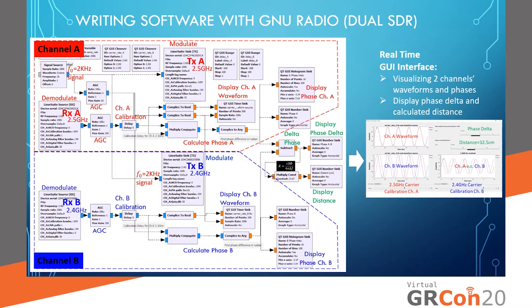Here is the GNU Radio code for my dual SDR design. It includes channel A and channel B, which are essentially slightly edited versions of the previous single SDR code, duplicated. There is also a portion which combines the two channels and calculates the distance. When I run this, I get a GUI interface which allows me to visualize the two waveforms and their phases, as well as display the phase delta and the calculated distance.